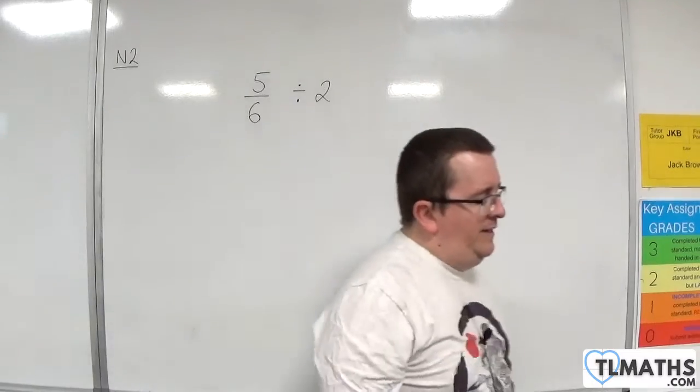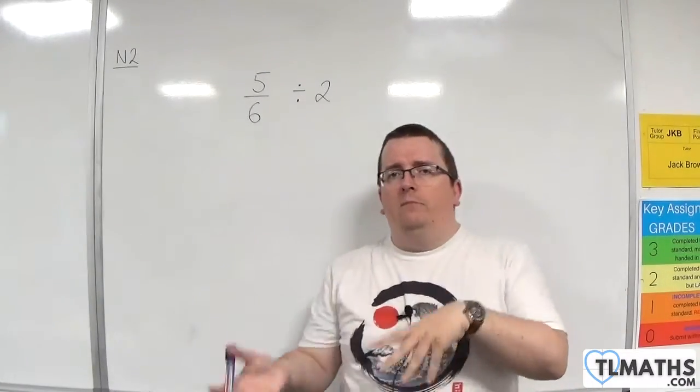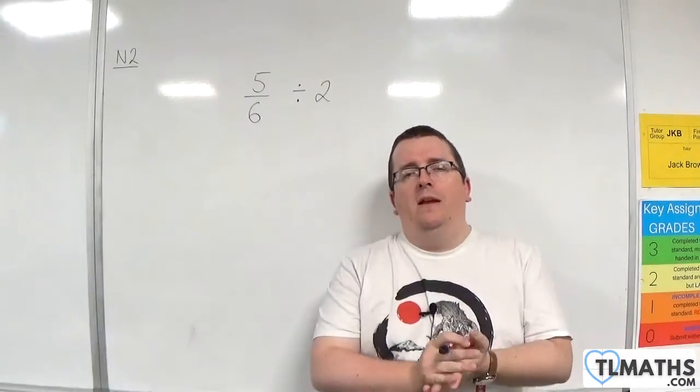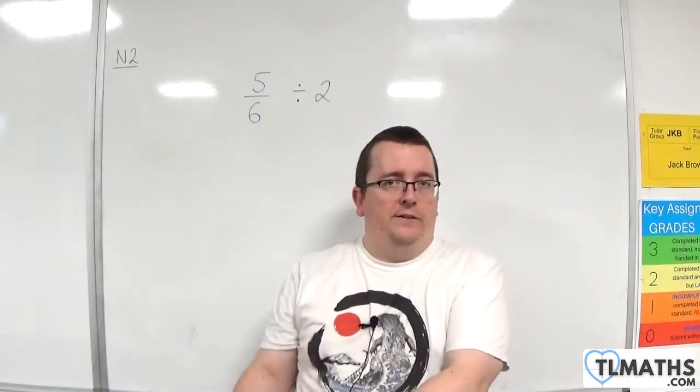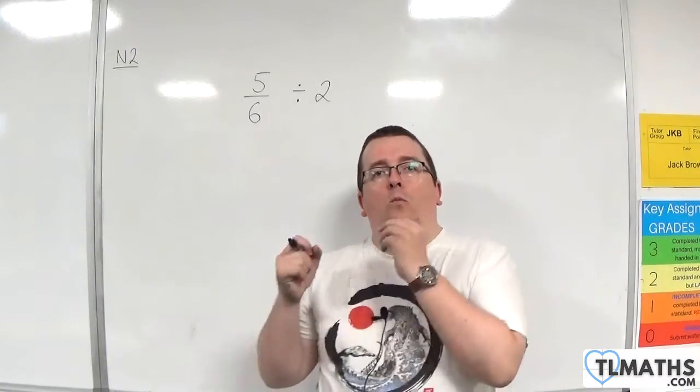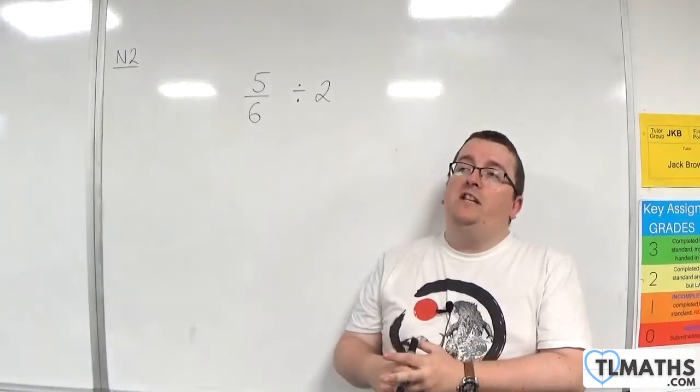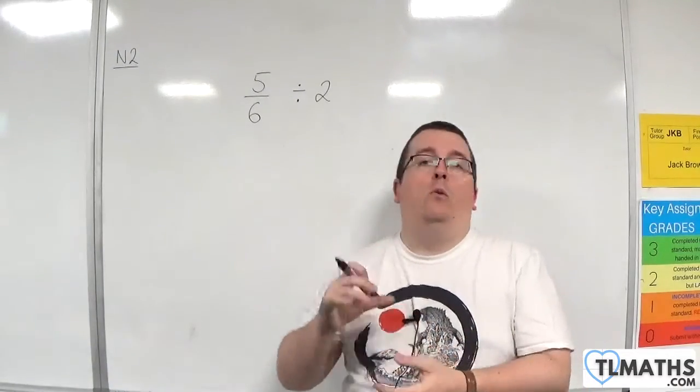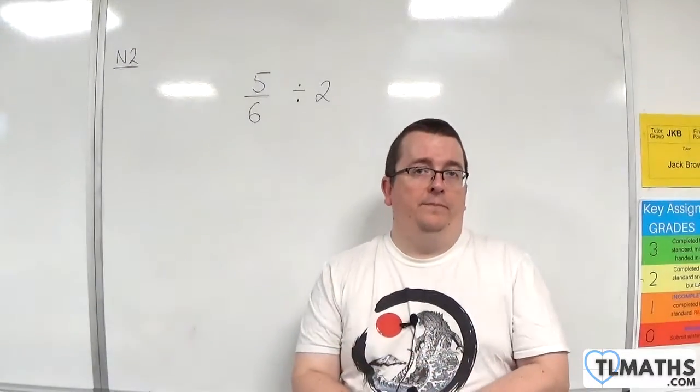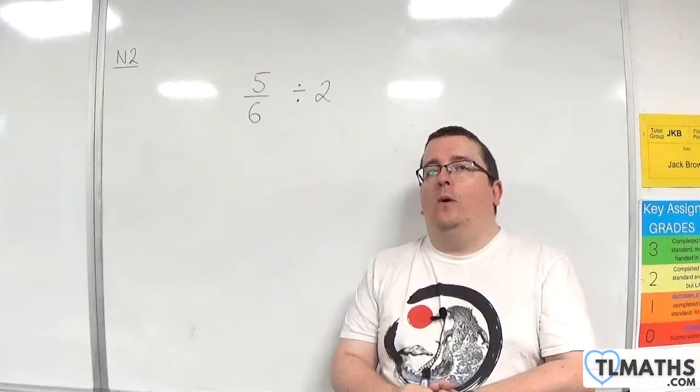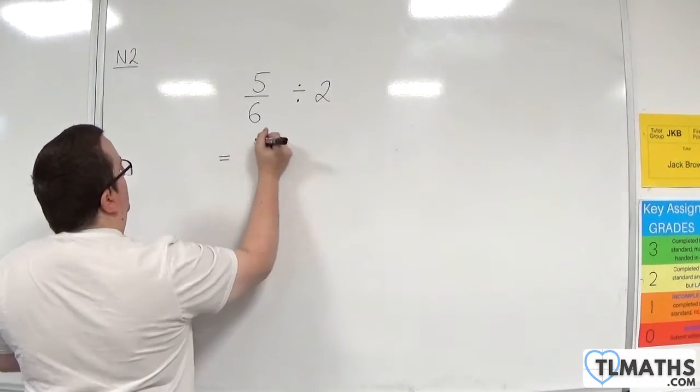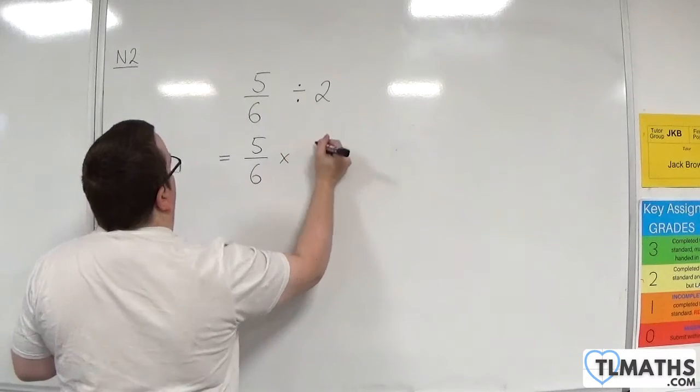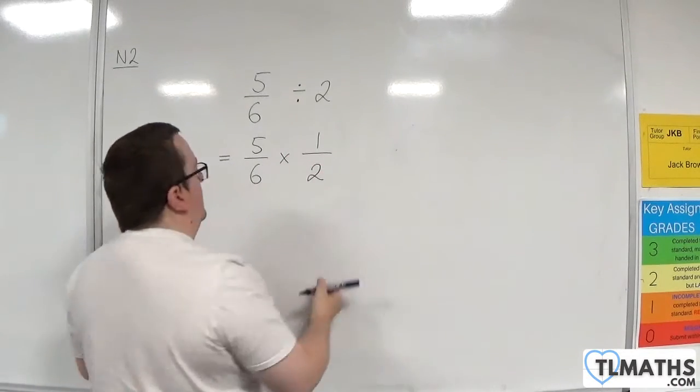The first thing that we need to understand is that when I'm dividing by 2, that is the same thing as saying I want half of that—I want one half of that. Or if I'm dividing by 3, I'm saying I want one third of that. So actually, dividing by 2 has to be the same as multiplying by one half.